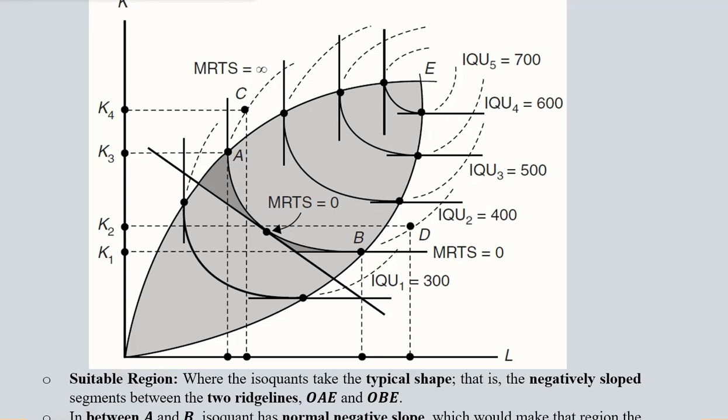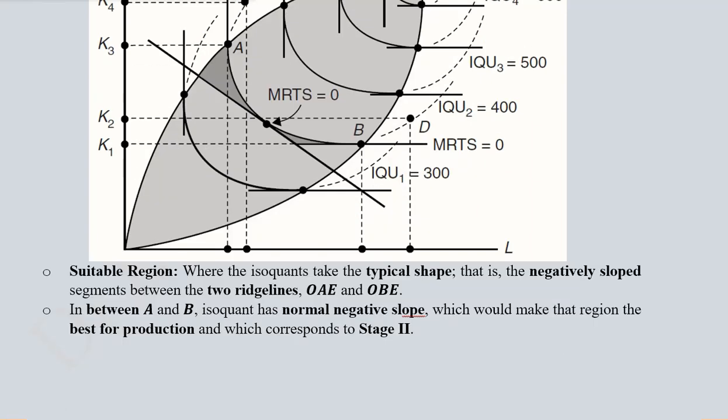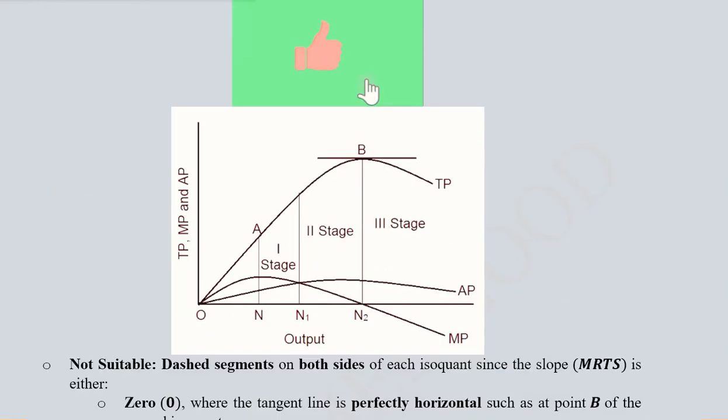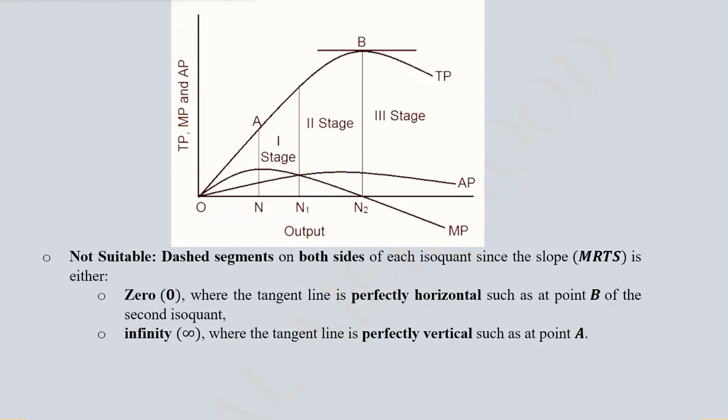So these are known as ridge lines that basically separate the economically efficient area from the economically inefficient area. This is what we have observed here. With the help of ridge lines we can come up with the suitable and non-suitable area. These are the same things that we already studied: the MRTS or the slope of the isoquant, which was zero and infinity at two points, that is point B and point A, perfectly horizontal and perfectly vertical.